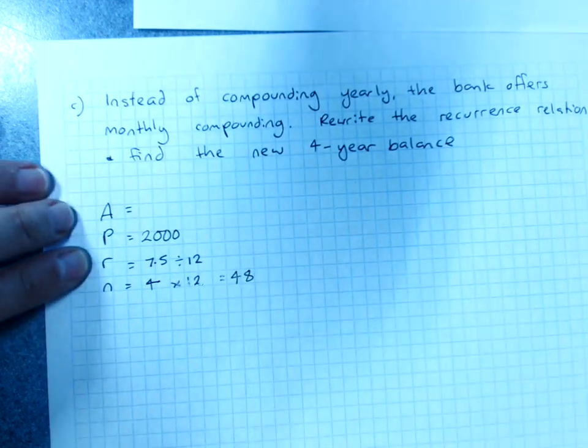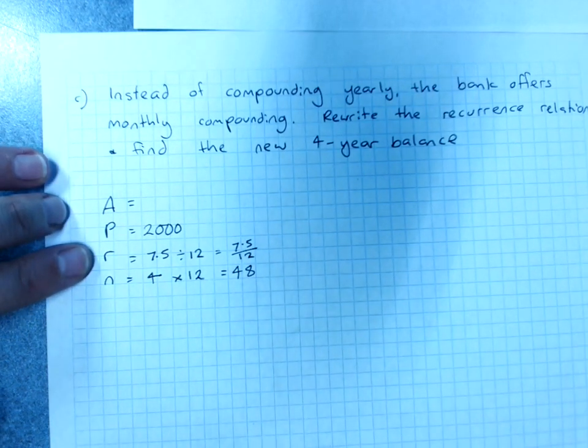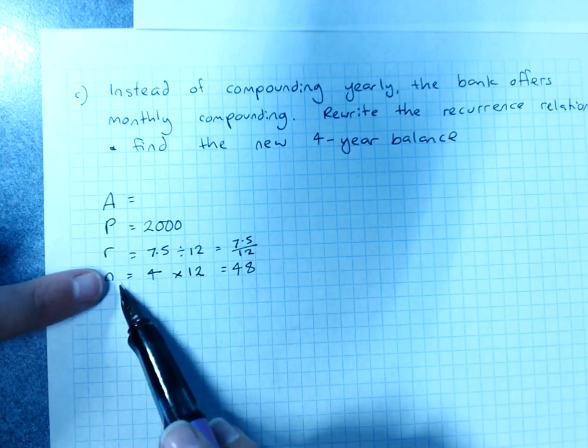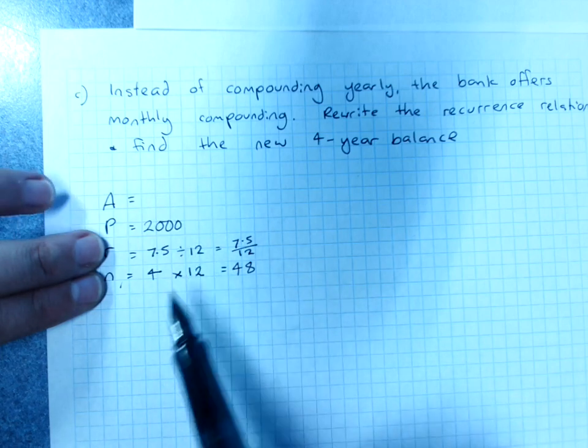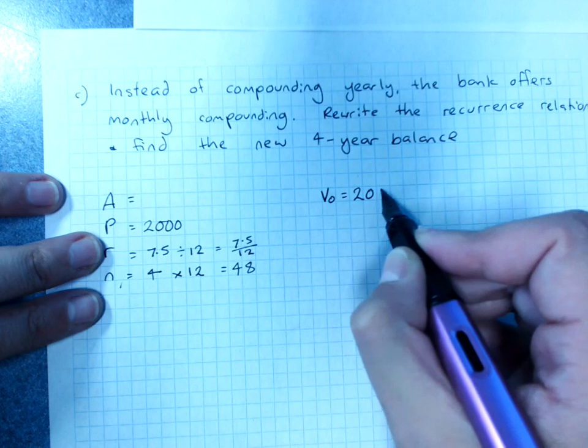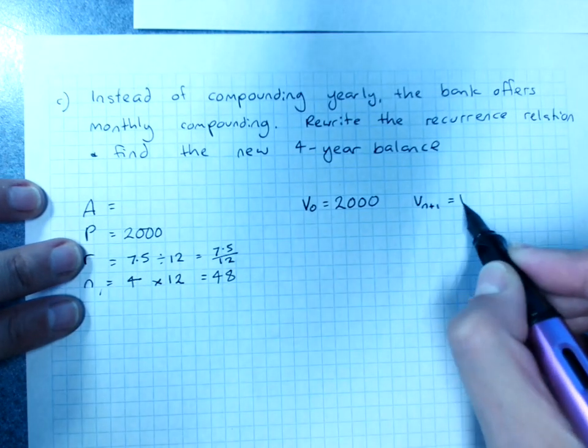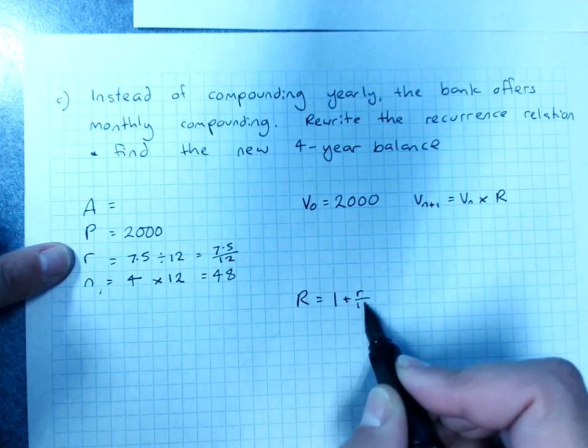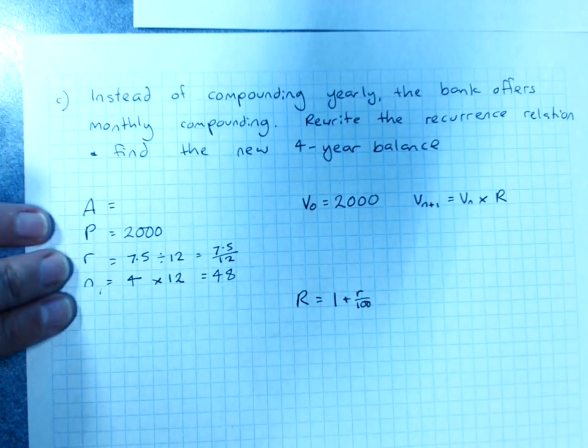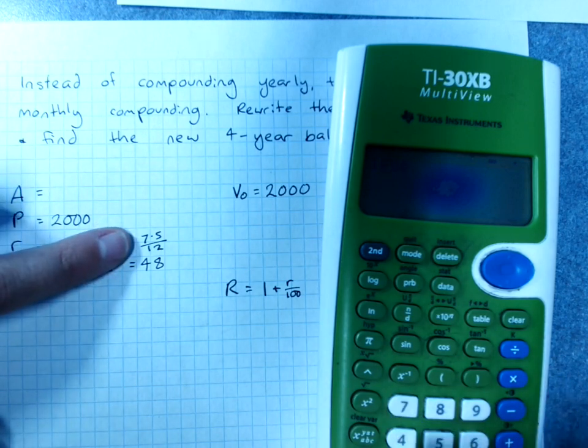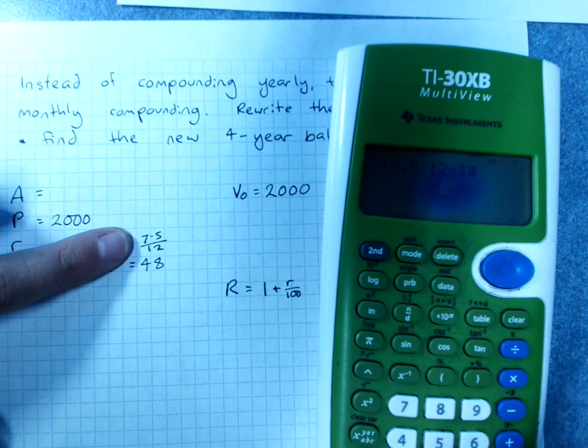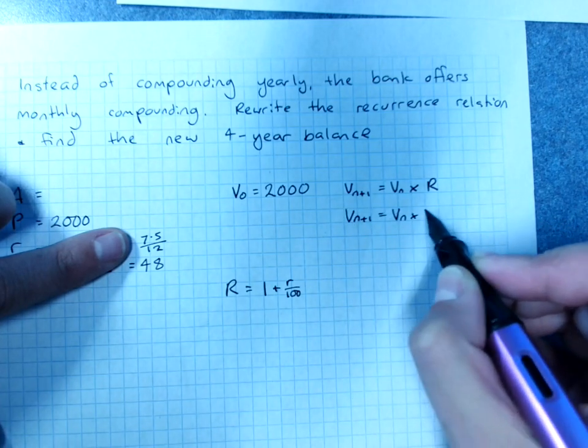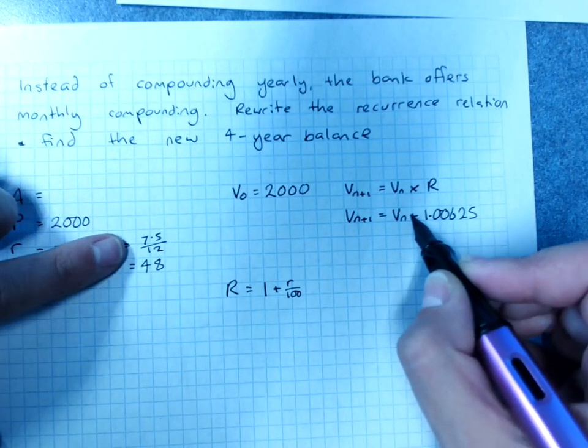So I've got 48 months. And you might as well just leave this as 7.5 over 12 because otherwise you'd have to round. So when it's monthly or quarterly or whatever compounding, you've got to change the number of time periods and the interest rate both into months or quarters or whatever it was. So then V0 would still be 2000. But then Vn+1 would be Vn times R. And to get my R, that's 1 plus the interest rate over 100. So that's going to be a much trickier calculation there. 1 plus 7.5 divided by 12 divided by 100. 1.00625. Don't go rounding. Of course, you could have put that the other way around. I'd just be very careful to make that a times sign.